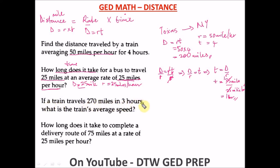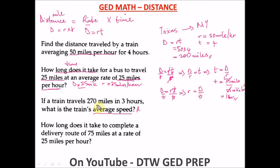Example three: if a train travels 270 miles in three hours, what is the train's average speed? In every math question, identify what you're looking for first — here it's the rate. From D equals RT, to make R the subject we divide both sides by T, giving us R equals D over T. Our D is 270 miles and our T is 3 hours. So R equals 270 divided by 3, which equals 90 miles per hour.